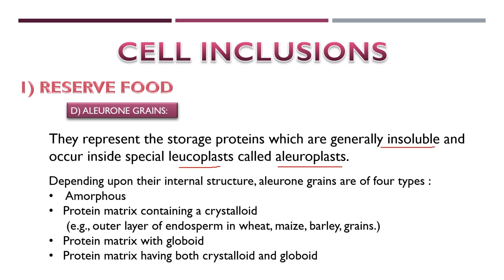Based on their internal structure, aleuron grains have four types: first, amorphous — which has a powdered form; second, protein matrix containing a crystalloid; third, protein matrix containing a globoid; and fourth, protein matrix having both crystalloid and globoid together.